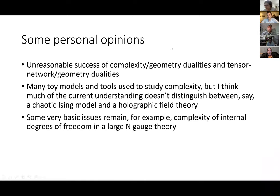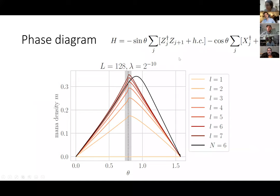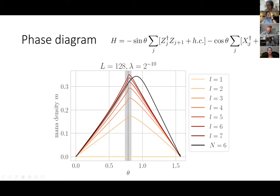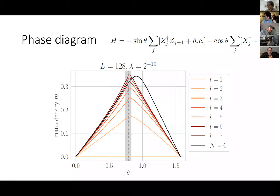Why are conformal field theories magical? Is there a story that goes with the plot that the mana peaks at the critical point, and do you expect it to generalize to other CFTs? I think the basic reason is not surprising at all: if either of these two terms dominates — the ZZ term or the X term — then it's clearly a stabilizer. The critical point is exactly where they compete in a sort of maximal way. So it's not at all surprising that at that point it's sort of maximally non-stabilizer-like. In that sense, I think it does capture a tension that you'd expect to generalize: having states that are simple in one basis versus another basis.